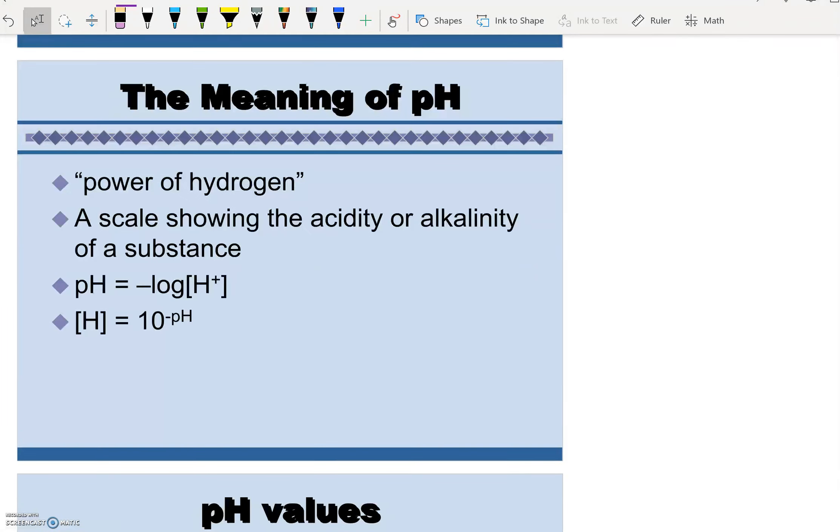So pH stands for the power of hydrogen. It's a scale that shows the acidity or alkalinity of a substance. Write down these two formulas. pH equals negative log of H plus. And H equals 10 to the negative pH. Two very important formulas to write down.